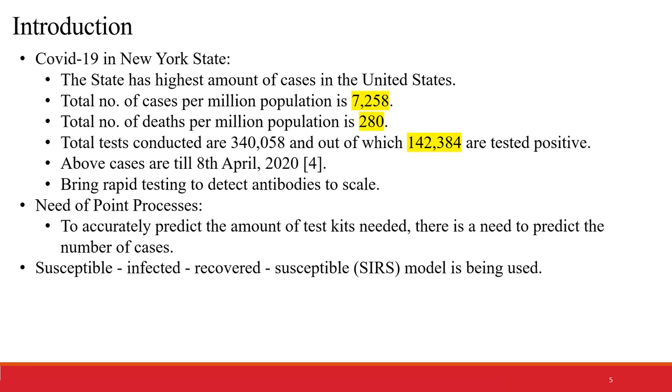The coronavirus has again made New York City ground zero after the 9/11 attacks. The center of the crisis is reshaping Americans' lives, liberties, and fears. In order to help solve this issue, we need to know the gravity of the issue by knowing the statistics of the New York State. The state has the highest number of cases in the entire country. The total number of cases per million population is 7,258, whereas the total number of deaths per million population is 280.